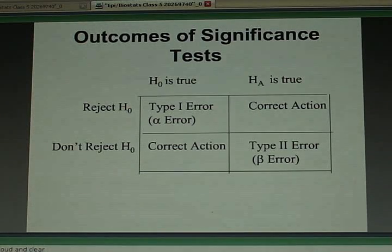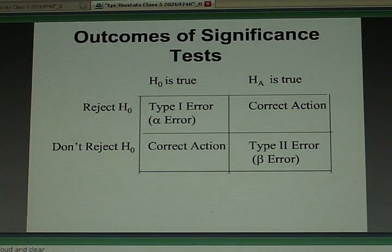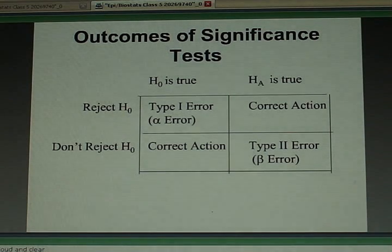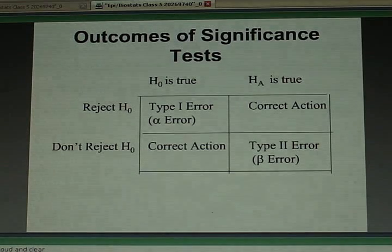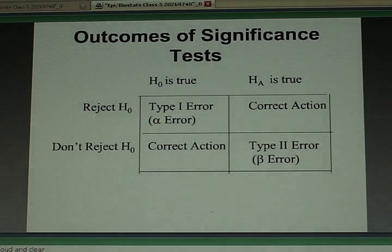And you might be making the correct conclusion or the incorrect conclusion. If the null hypothesis were actually true, you say you have a statistically significant result. You reject the null hypothesis. You'll make a mistake. It's called a type 1 error or an alpha error.